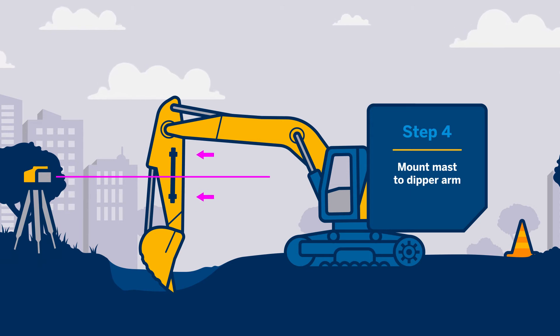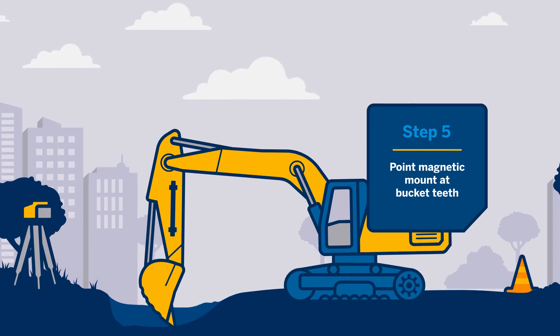Mount the magnetic mount on the side of the dipper arm within the laser reception area. The height of the laser may need to be adjusted. Ensure the magnetic mount points to the bucket teeth. This may mean that the dipper arm and the magnetic mount are not parallel.